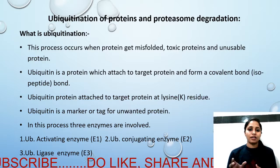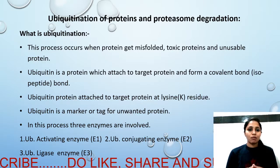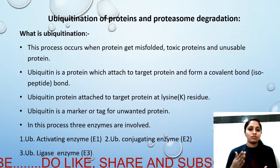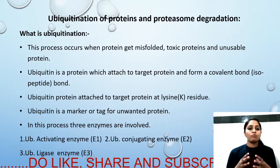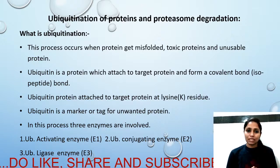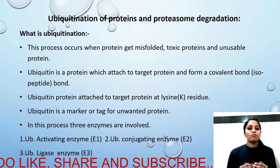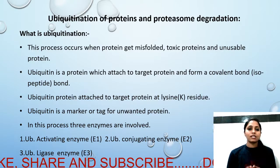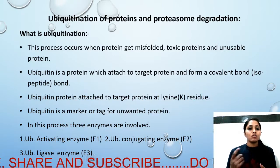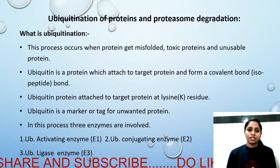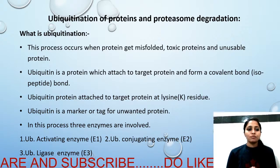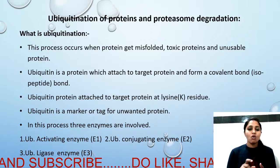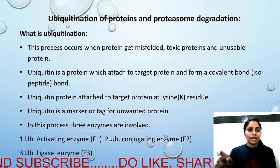Ubiquitination of any protein happens when it needs to be degraded and sent into the cytosol. Protein folding basically occurs inside the endoplasmic reticulum, and when folding does not happen correctly, the protein is tagged with ubiquitin and sent into the cytosol for degradation. So ubiquitination means a ubiquitin tag is placed on a misfolded protein.